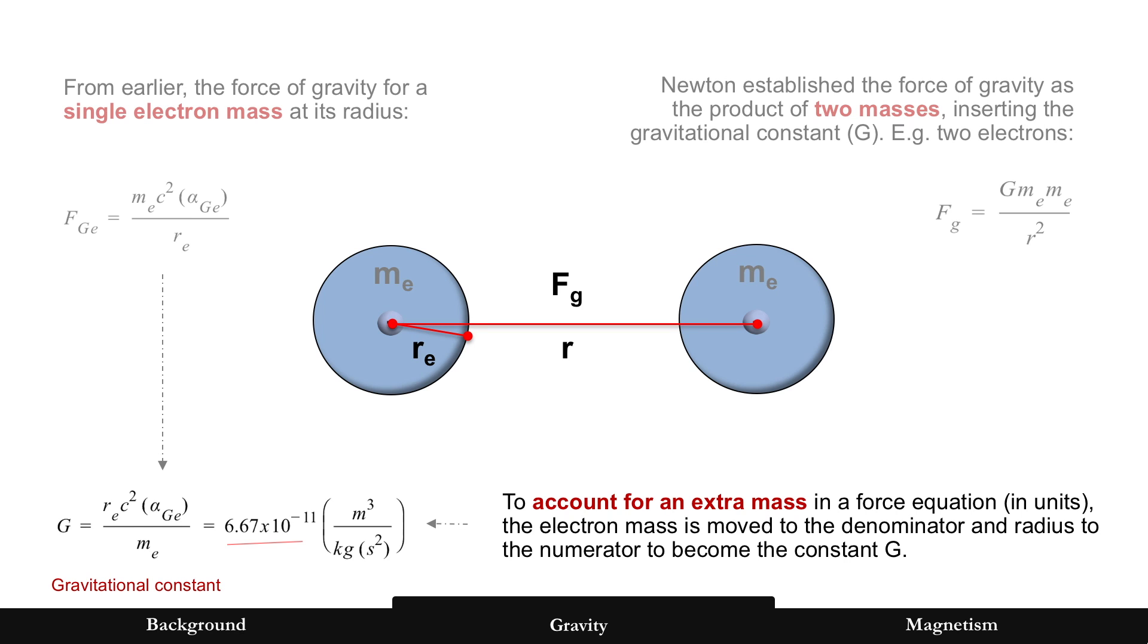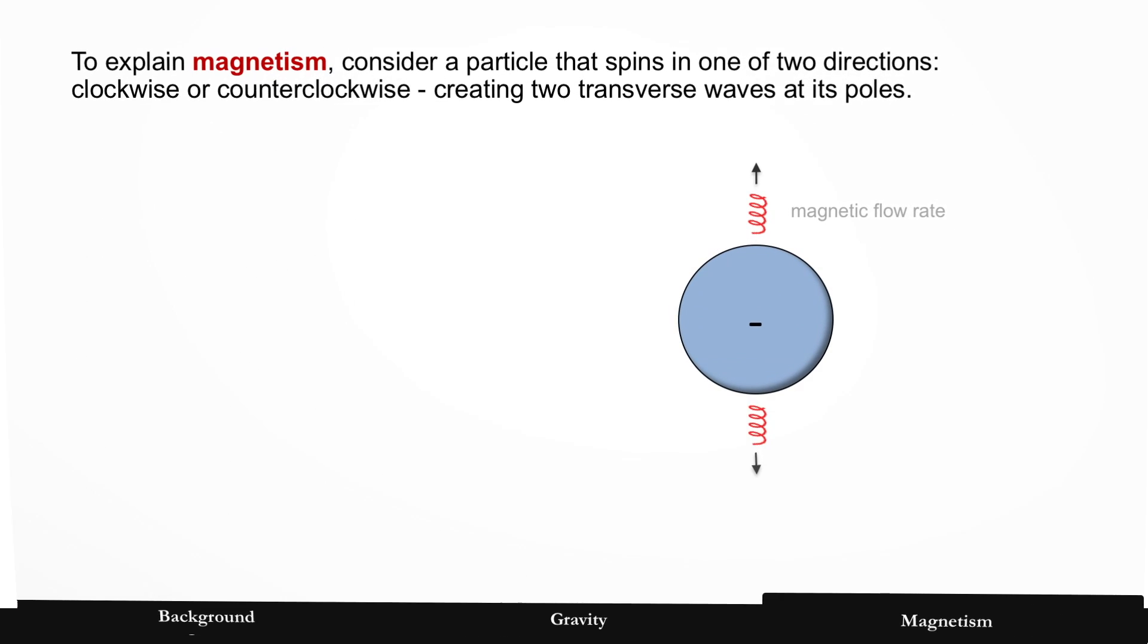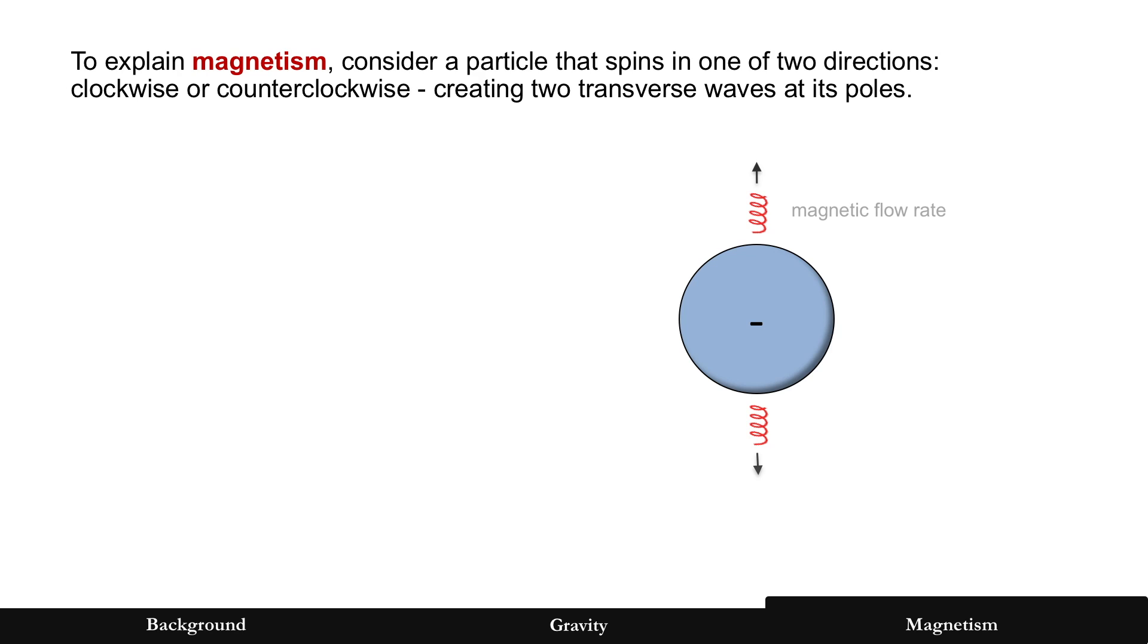Oh, but wait, there's a lot more. Because we're going to get to magnetism now and explain how magnetism is related to gravity. So, let's do this. Let's consider a particle that spins in one of two directions, counterclockwise or clockwise, and it creates two transverse waves at its poles.